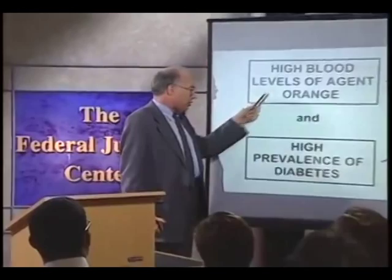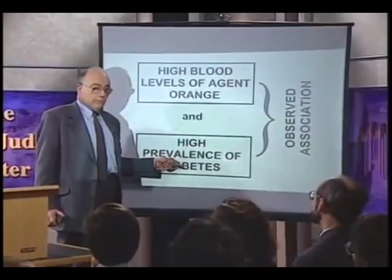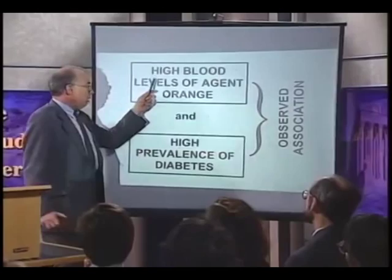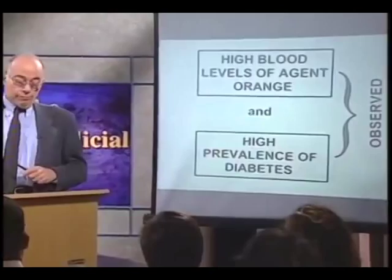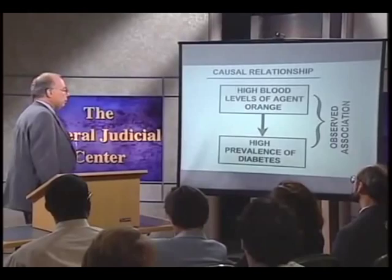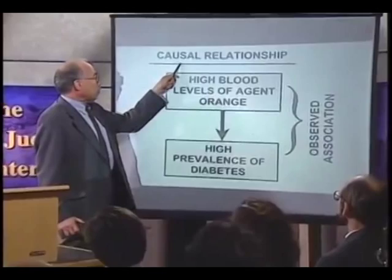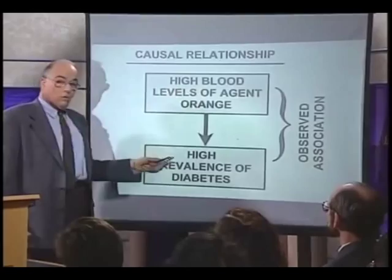Finally, a more recent example: a study that raised the question whether high blood levels of Agent Orange are associated with a high prevalence of diabetes in adults. The authors reported an observed association of increased blood levels of Agent Orange and prevalence of diabetes. What does that association mean? It is possible the association reflects a causal relationship — that high blood levels of Agent Orange cause a high prevalence of diabetes. But the possibility was also raised that this observed association might be due to confounding.